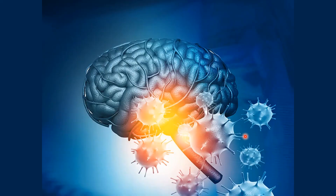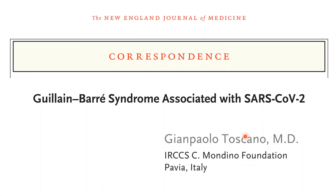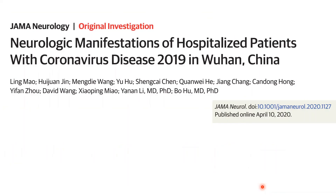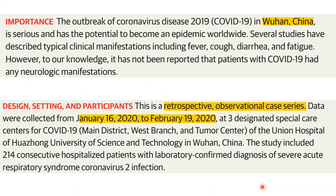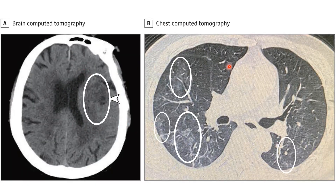Regarding neurological manifestations in COVID-19, there are mainly three proposed pathways: one is through the cribriform plate, which can affect smell and other systems; the second is through systemic circulation or as part of the immunological response. An article from Italy in NEJM found around five patients who developed GBS after the onset of COVID-19 after 7 to 10 days. A JAMA article from Wuhan, China, looking at neurological manifestations in hospitalized patients found that data collected between January 16th and February 19th showed 78 patients — around 40% — had neurological manifestation, 6% had CVA, and around 15% had altered sensorium.